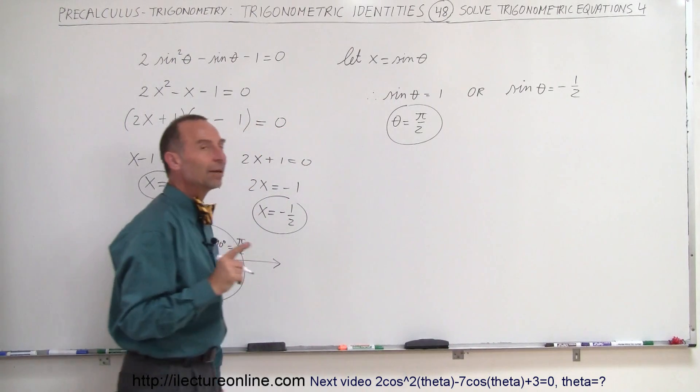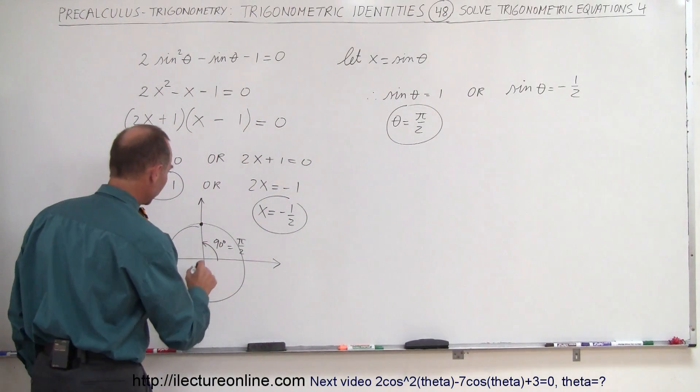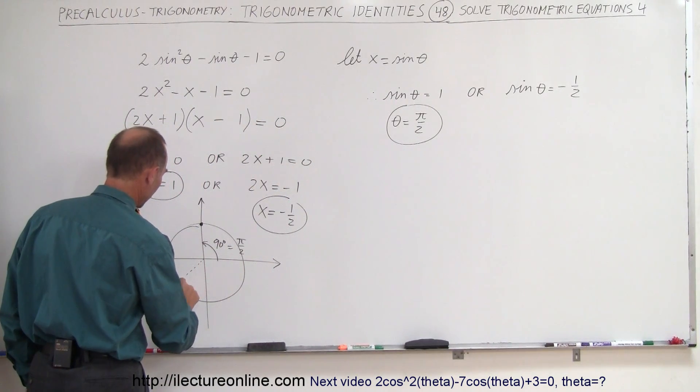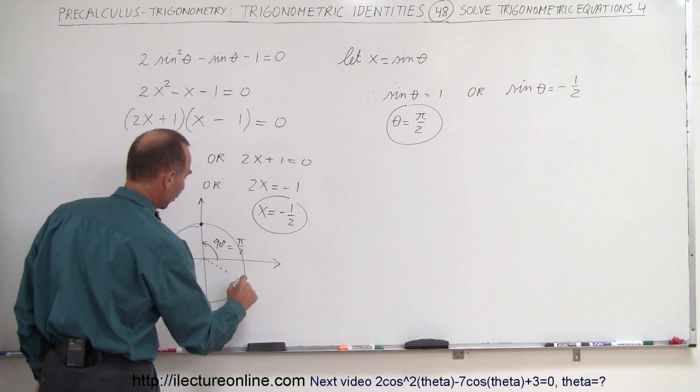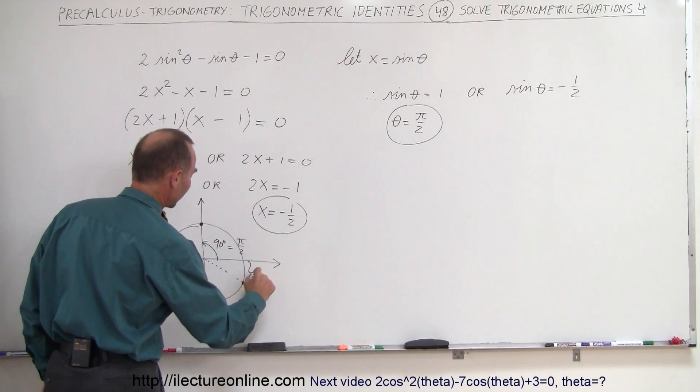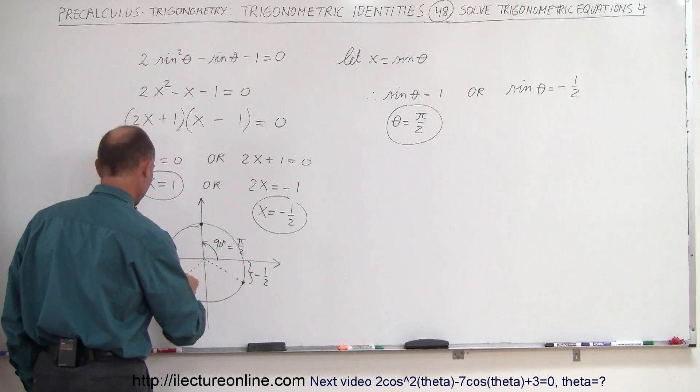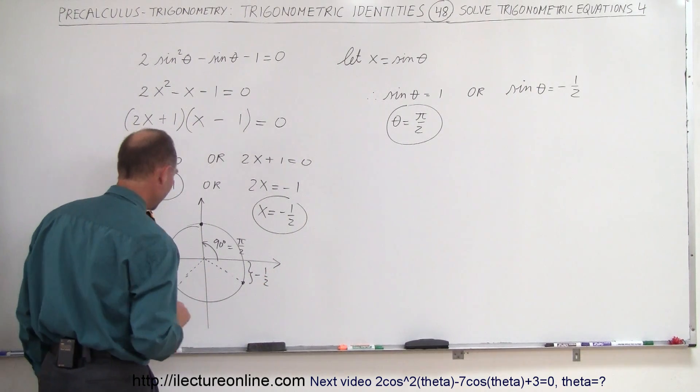But when can the sine of theta be equal to negative 1 half? Well, it can be equal to negative 1 half over here and equal to negative 1 half over there. So that this value here is minus 1 half and this value here is minus 1 half.